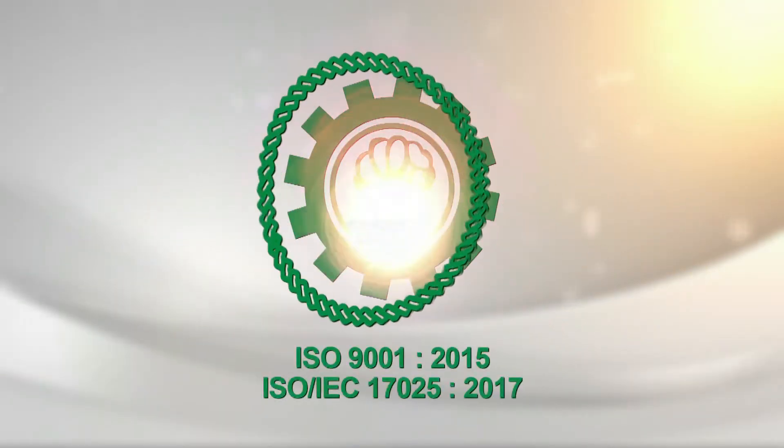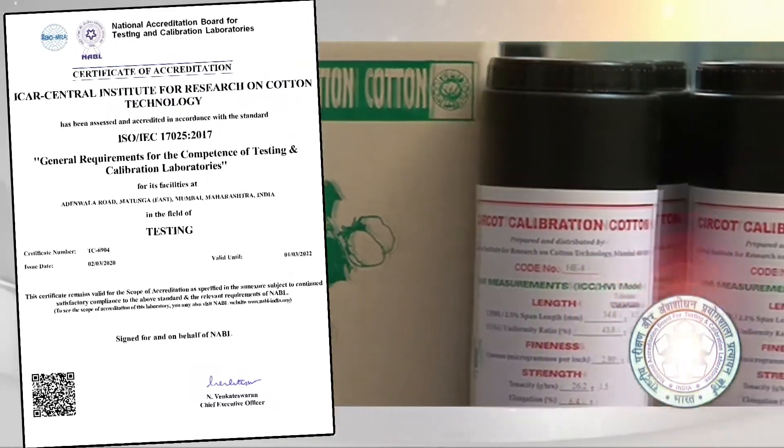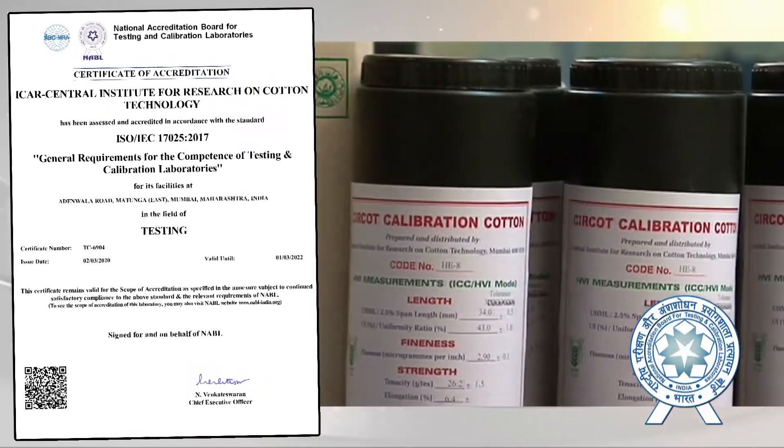CIRCOT is an ISO-certified institute and an accredited laboratory under NABL, functioning as a referral laboratory for cotton textile.